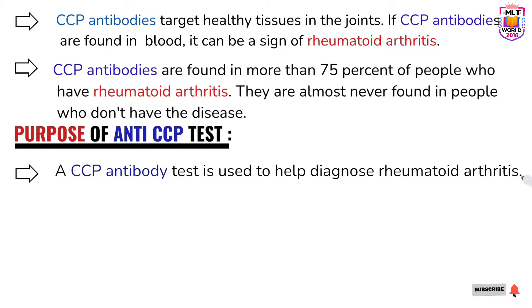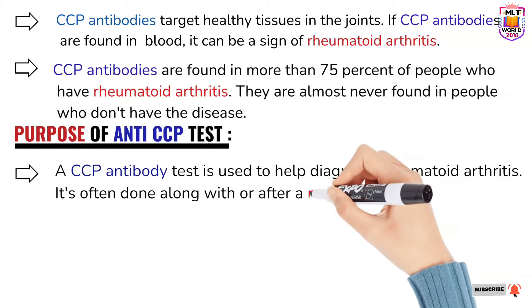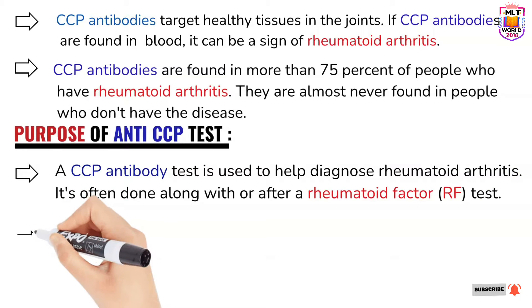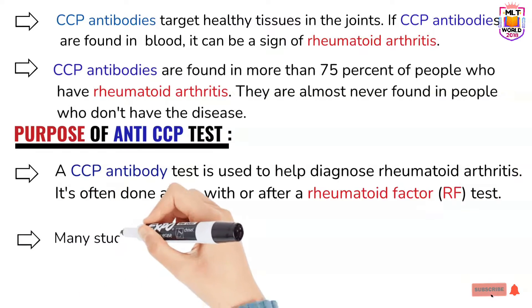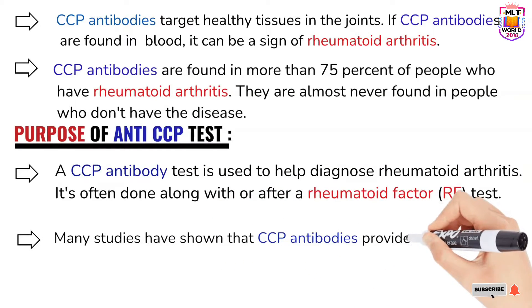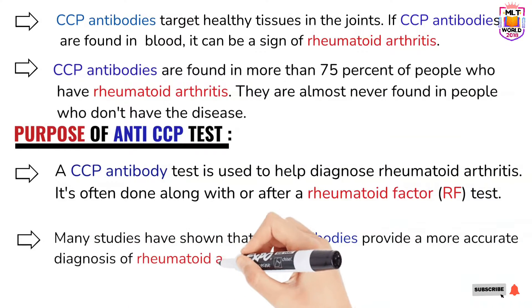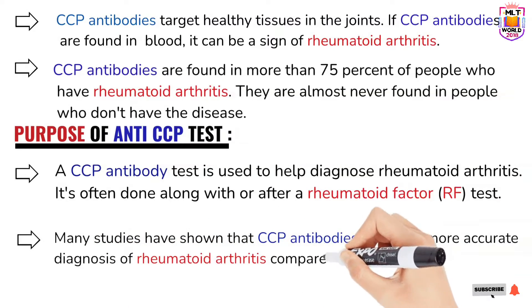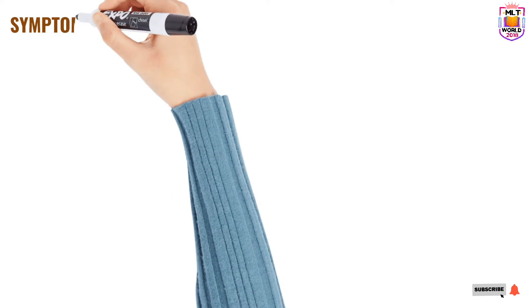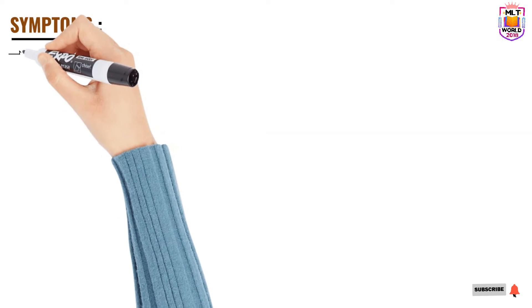The main purpose of checking anti-CCP antibodies is to determine whether a patient has rheumatoid arthritis or not. If anti-CCP is positive, it means the patient has rheumatoid arthritis. The anti-CCP test is done alongside the rheumatoid factor test — if both are positive, it indicates the presence of rheumatoid arthritis. However, most studies have shown that the anti-CCP test is more accurate than the rheumatoid factor, so doctors are mostly ordering the anti-CCP test for confirmation.